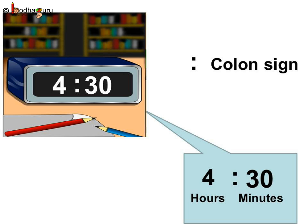So look, this is 30 minutes past 4. How do we write it? It is as shown in the digital clock: 4 colon 30, which means 30 past 4 or 4 hours and 30 minutes. Understood?